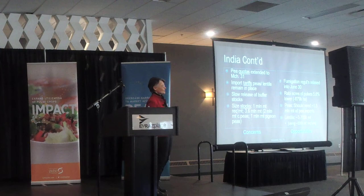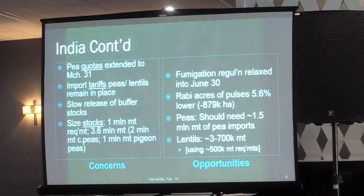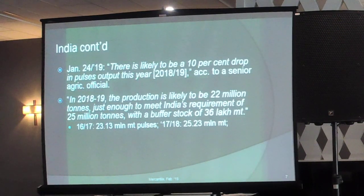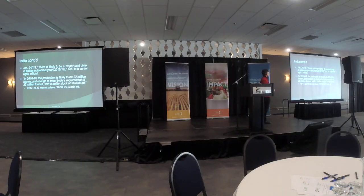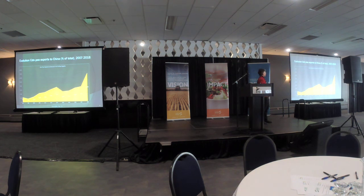India also has stocks — we estimate about 3.5 to 3.6 million tons, with 2 million being peas and about 1 million tons of pigeon peas, which affects chickpeas not peas. In the end, we think they will need to buy about 1.5 million tons of peas and around 500,000 tons of lentils, so there are some opportunities. There's likely to be a 10 percent drop in their domestic production. They consume about 22 to 25 million tons per year, and with buffer stock requirements of about 1 million tons, they could well be buying more.